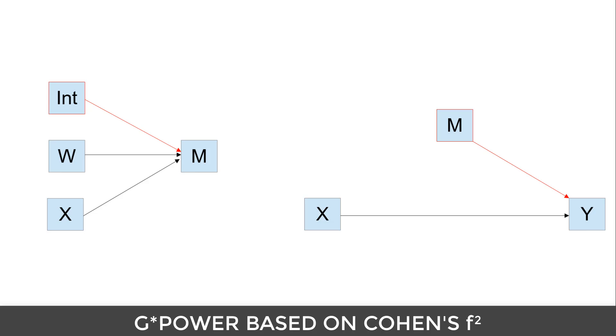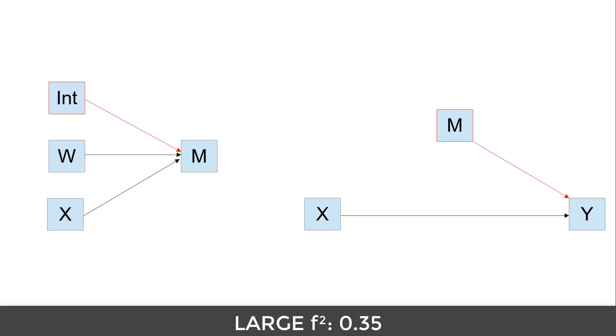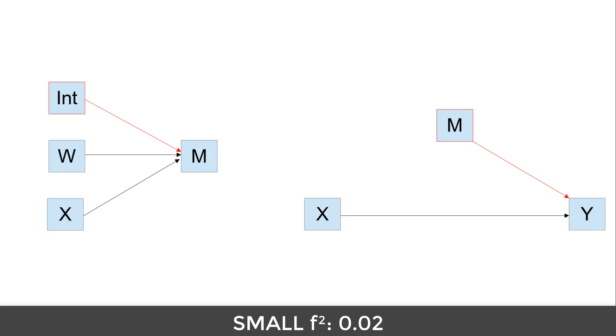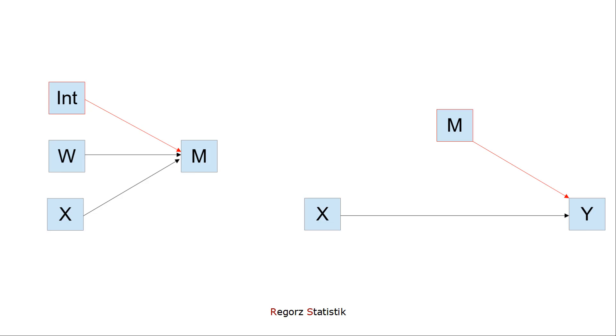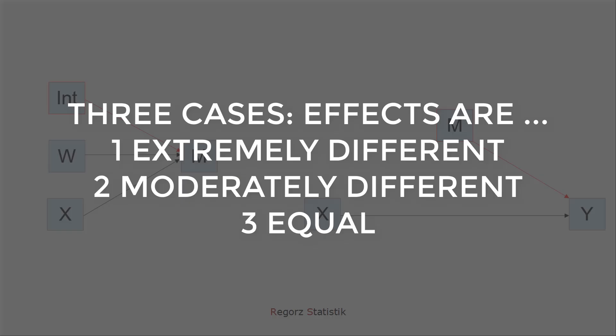GPower for regression works with Cohen's f-squared as an effect size measure. 0.35 would be a large effect, 0.15 would be a medium effect, and 0.02 would be a small effect, according to Cohen. You can also assume effect sizes in between those numbers. In this tutorial, we look at three different cases: both effects are extremely different from each other; both effects are only somewhat different; and both effects have the same size.